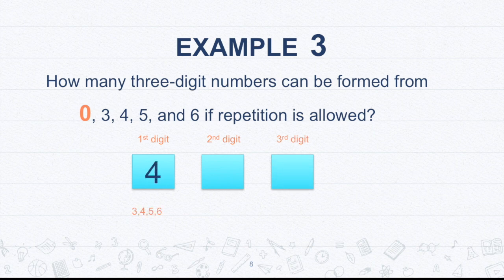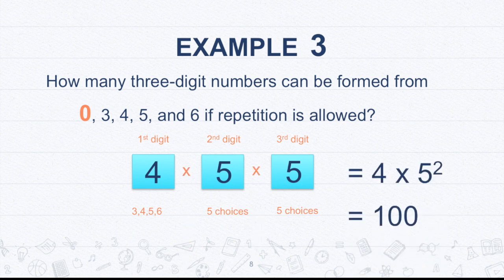So which means we only have four choices for that. Second digit, five choices because this time, second digit now can be zero. And since repetition is allowed, a third digit will give us five choices. So multiplying all of these three numbers, we will have four times five squared, which is equal to 100. So just be mindful of that if the question concerns about coming up with the number of n-digit numbers: the first digit must not be zero.